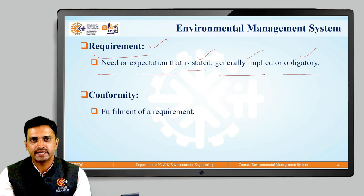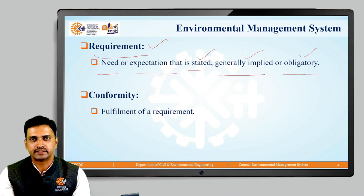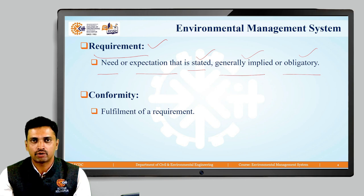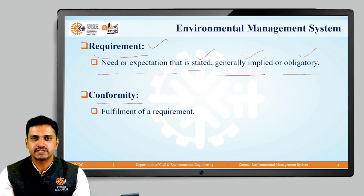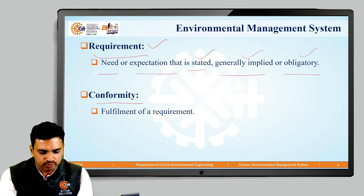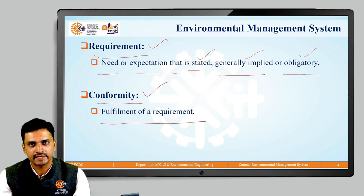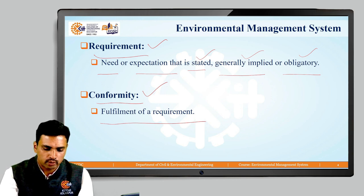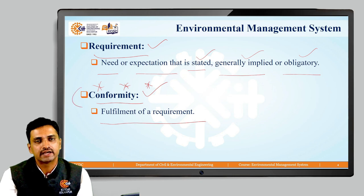When a requirement is stated under environmental management system, it needs to be fulfilled. When an organization and its people take efforts for fulfillment of a requirement and that requirement is fulfilled, we call conformance as reached. When there is a fulfillment of a requirement, it is called conformance is reached or conformity is achieved. Under environmental management system, efforts are necessary in order to get maximum conformities.